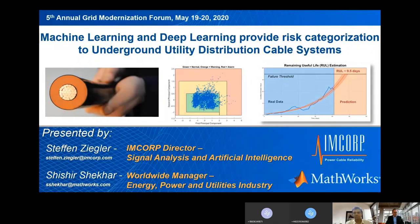My name is Stefan Ziegler. I'm the Director for Signal Analysis and Artificial Intelligence at INPAR. I'm presenting today with Shishikar, who is the Worldwide Manager for Energy Power and Utilities Industry at MathWorks, an approach of machine learning and deep learning that provides risk categorization to underground utility distribution cable systems.